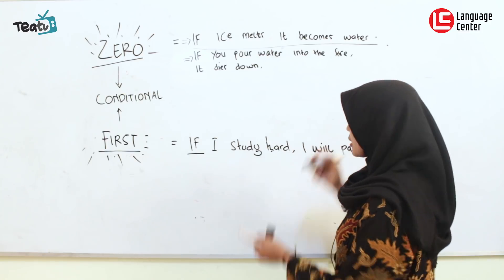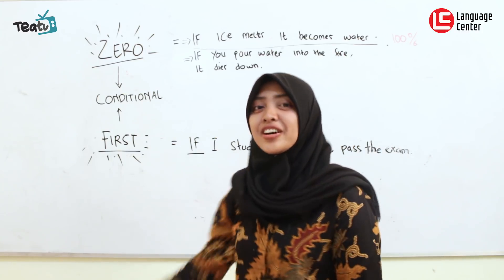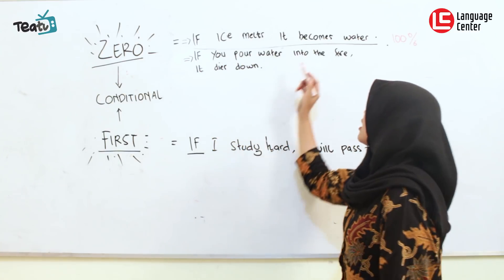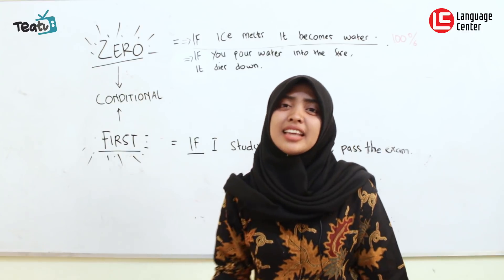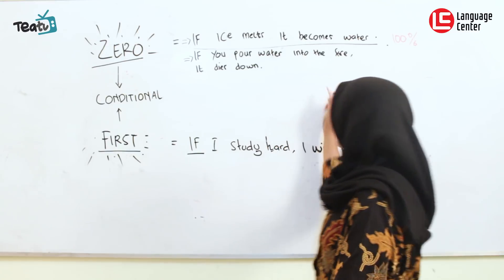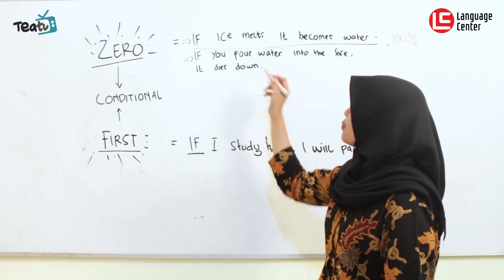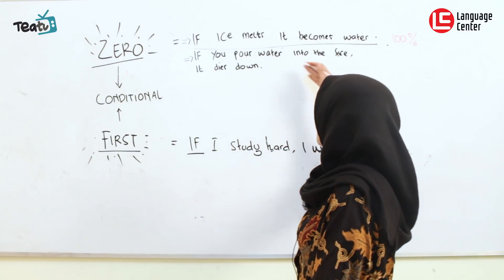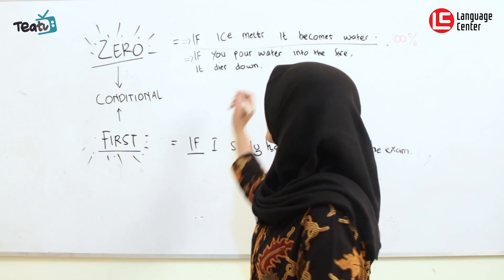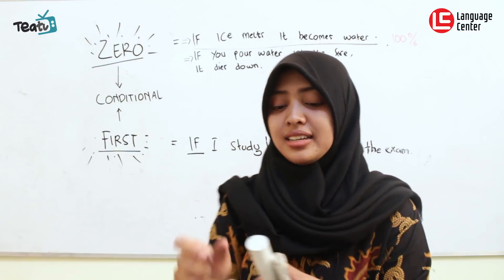So this is called the real condition — 100% correct. And the second example: if you pour water into the fire, it dies down. It's impossible that when we pour water on fire the fire flames up even more. Or if you pour oil into the fire, it's not extinguished — it keeps burning. So this is called the real condition, 100% correct.